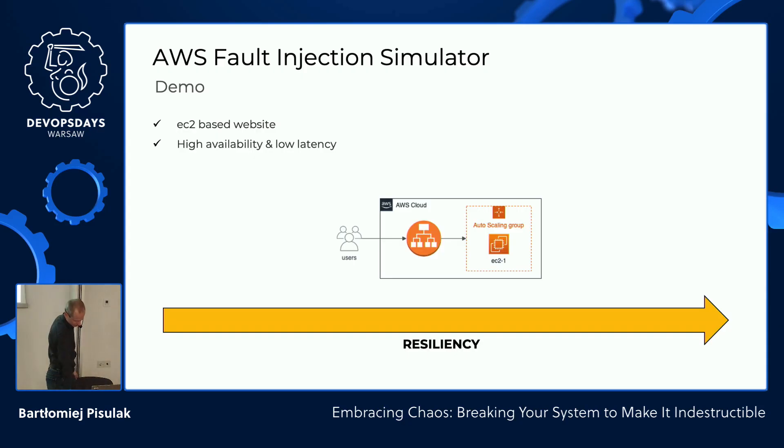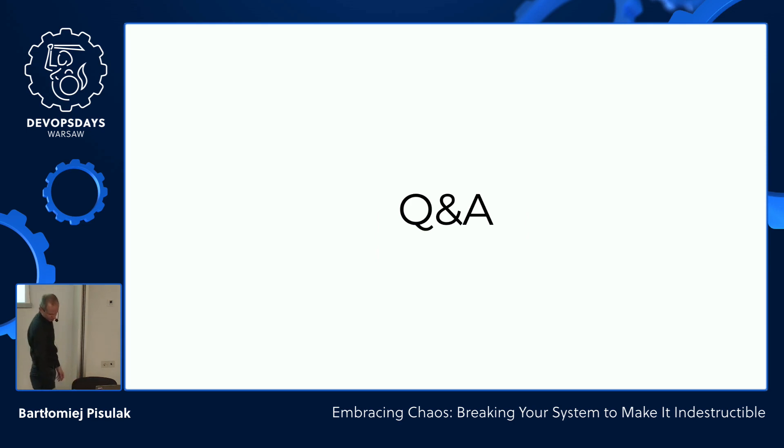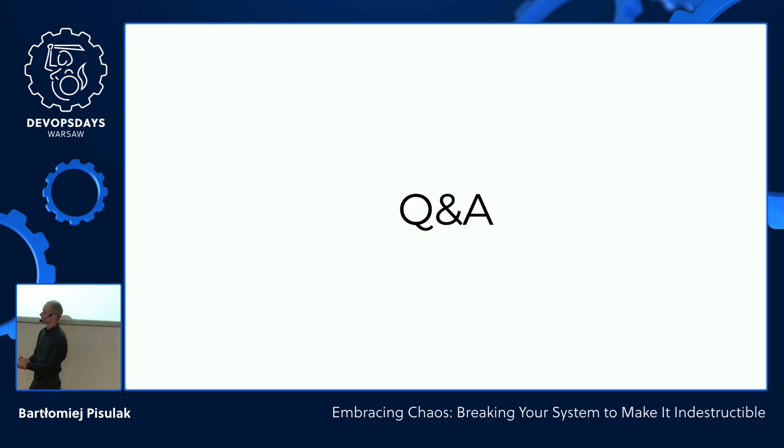Now you should start questioning your own service. Is the technology you use right? A website based on EC2 instances — is it the right approach? Probably not. But what I really wanted to show you is how easy it is to set up a chaos experiment using AWS Fault Injection Simulator. That was the main purpose of this experiment. So with that being said, that would be it from me. Thank you so much, and I'm waiting for questions.